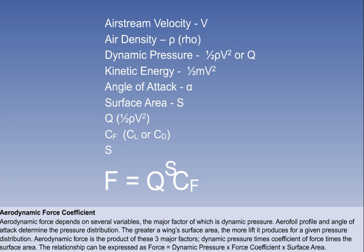The relationship of these three factors is expressed in the equation F equals Q times CF times S, where F is the aerodynamic force either lift or drag, Q is the dynamic pressure half rho V squared, CF is the coefficient of aerodynamic force, and S is the surface area.